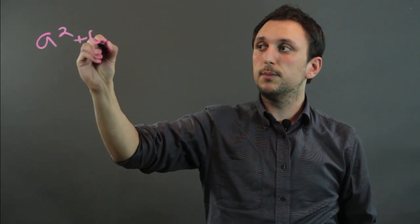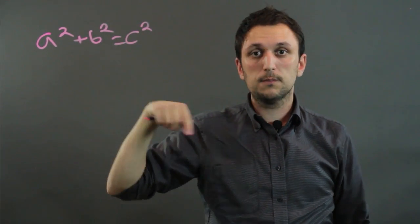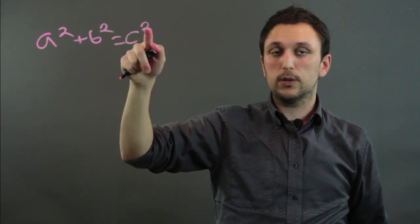Now the Pythagorean theorem says this: a squared plus b squared equals c squared. So a, b, c - a squared plus b squared equals c squared.